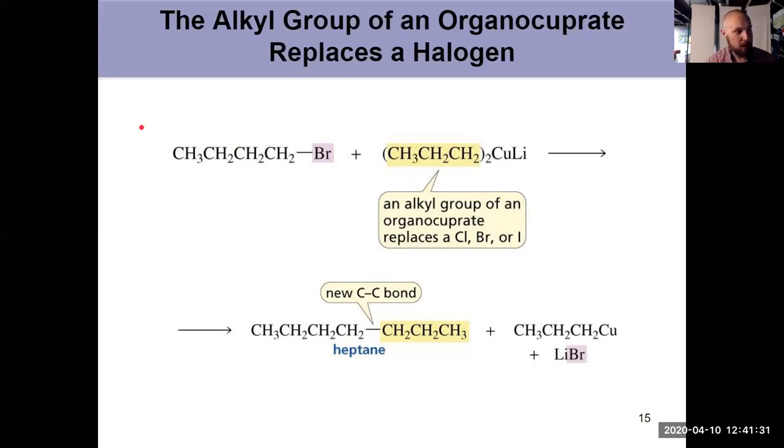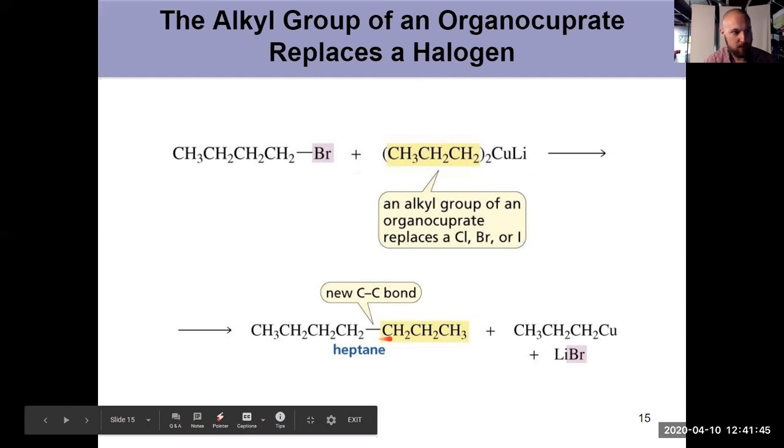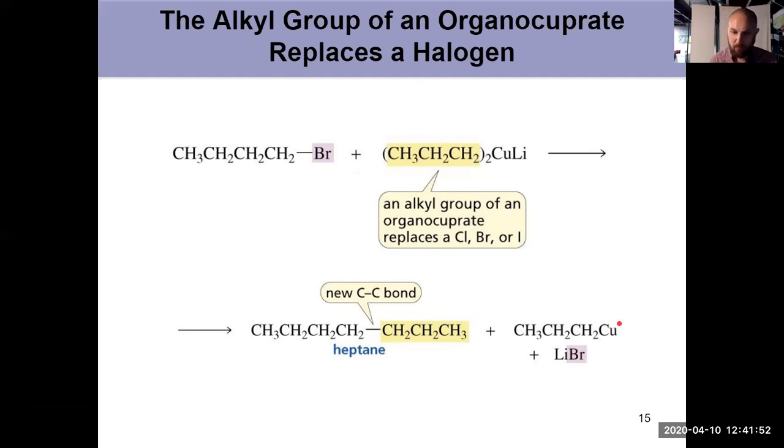You displace whatever your halogen was, bromine in this situation. Basically these things are incredibly easy to write the products for and you don't have to know the mechanism because the exact mechanism isn't known. You just take the group from the alkyl halide, one of the groups from your Gilman reagent, put them together - new carbon-carbon bond, that's your product.